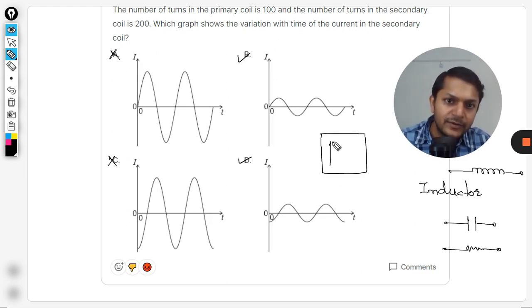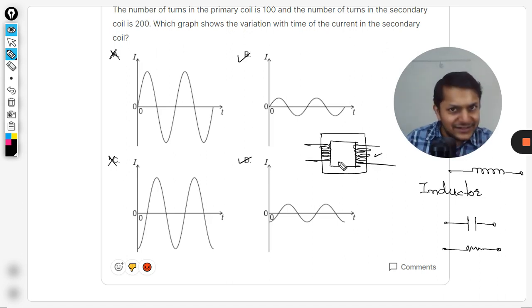This is the primary coil and this is the secondary coil. So this is a solenoid, and this solenoid when used in alternating current as a device becomes an inductor. So basically this should be taken as an inductor.